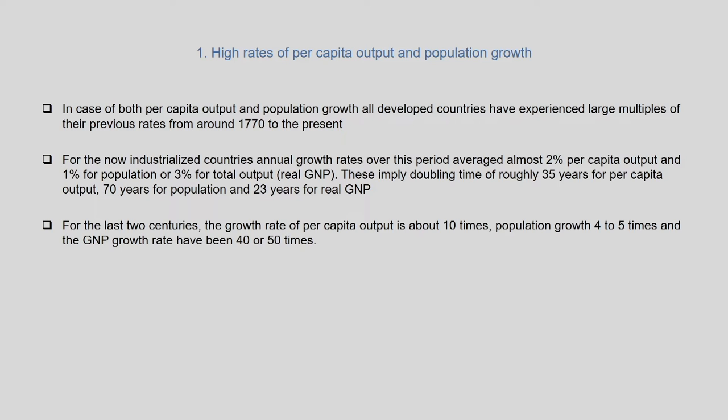These estimates had real implications for the growth story of nation-states in the post-1940s period. For the last two centuries, Kuznets implied that growth rate of per capita output is about 10 times higher than before, population growth 4 to 5 times higher, and GNP growth rate about 40 to 50 times higher. This is why GDP or GNP per capita showed very high potential for increase over time, making economic growth one of the important indicators of development.